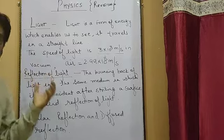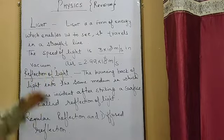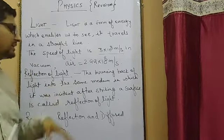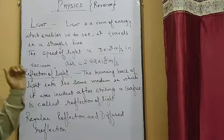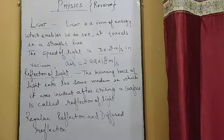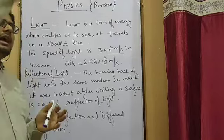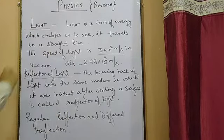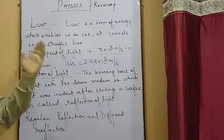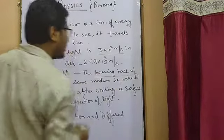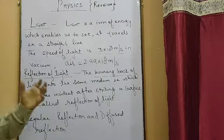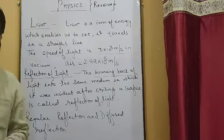The next topic is reflection of light. We should know what reflection of light is. The bouncing back of light into the same medium in which it was incident, after striking a surface, is called reflection of light. Suppose a ray of light is coming from a bulb — the source of light — it strikes on a surface, and after striking, the light energy bounces back into the same medium from which it was coming.